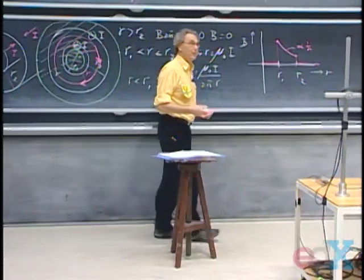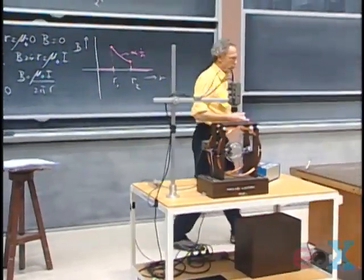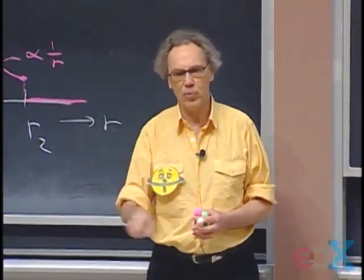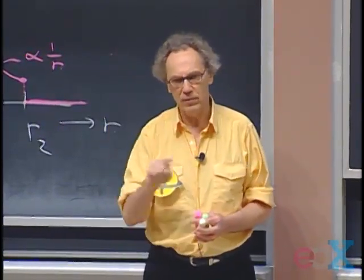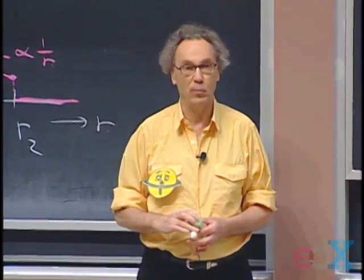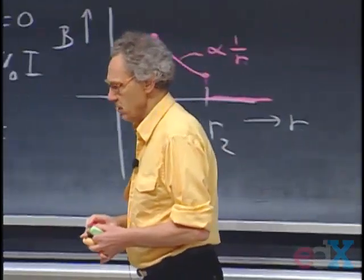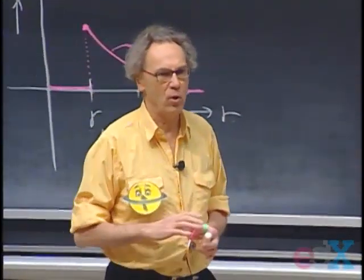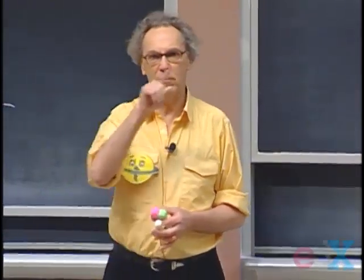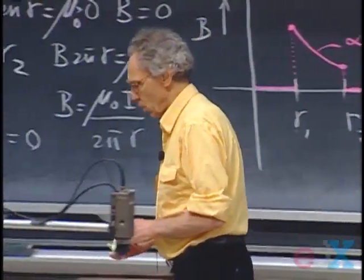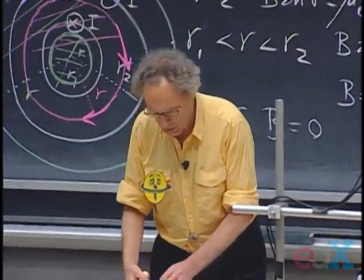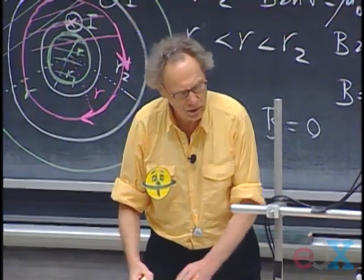There is one case — which we did in lectures — where we wanted to calculate the magnetic field inside a solenoid, where Ampere's law works very well even though we don't use circular closed loops; we chose a rectangle. We assumed that the magnetic field was uniform inside the solenoid and zero outside — not a bad assumption. That allows you, with Ampere's law using a rectangular loop, to get the magnetic field inside a solenoid. Check your lecture notes or watch the lecture again on the web.